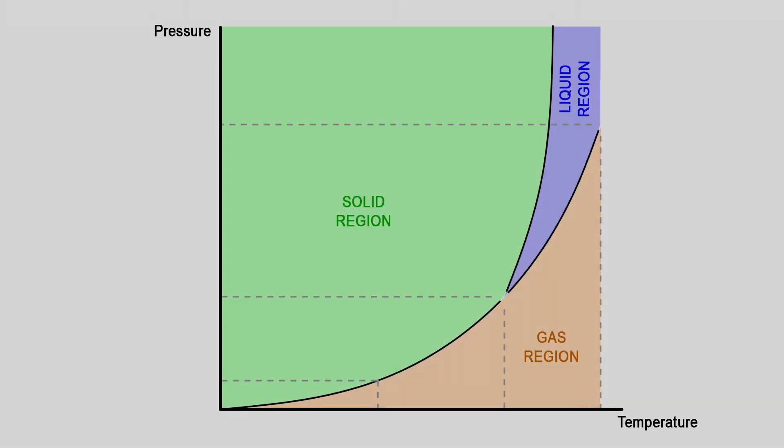The PT diagram for carbon dioxide is shown and has its own distinct characteristics. Note that very high pressures are needed to create a liquid state, about five times Earth's atmospheric pressure.